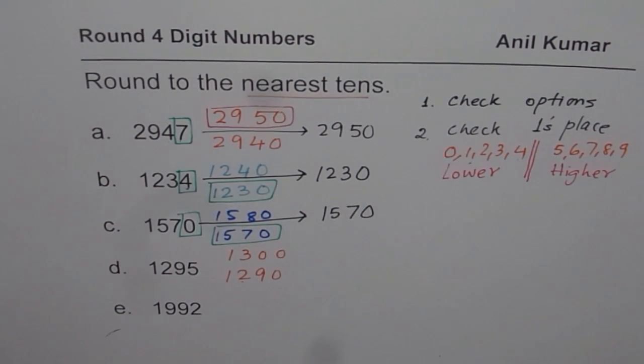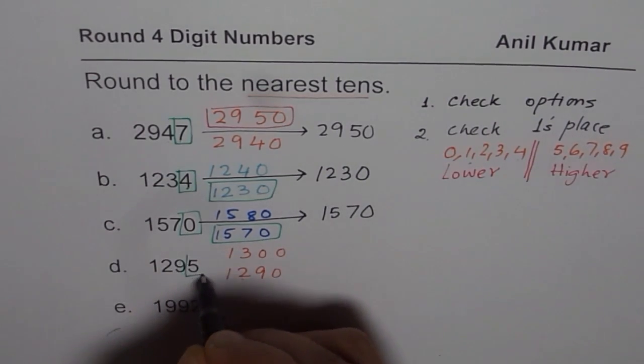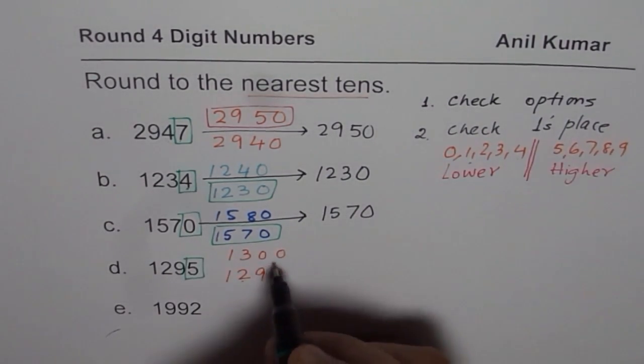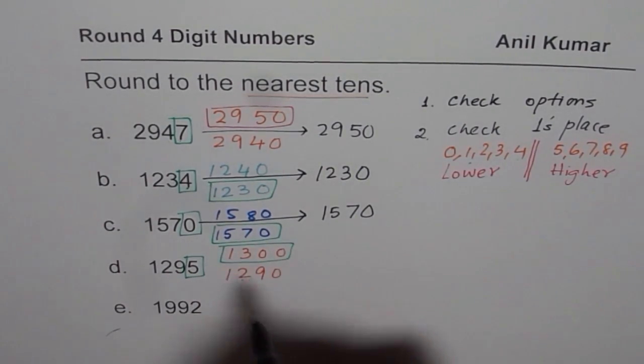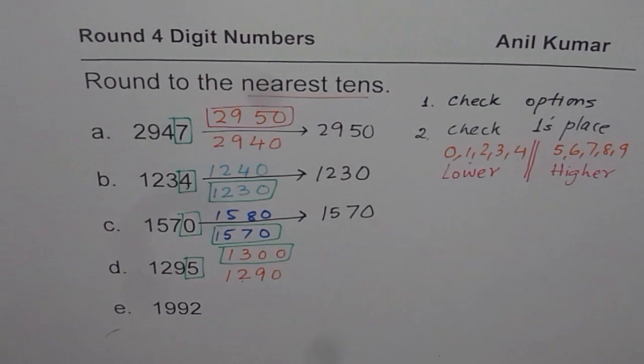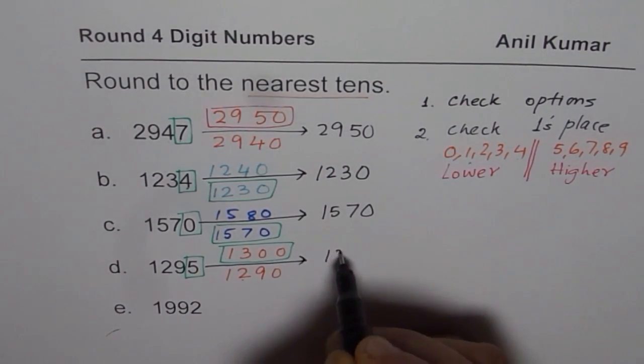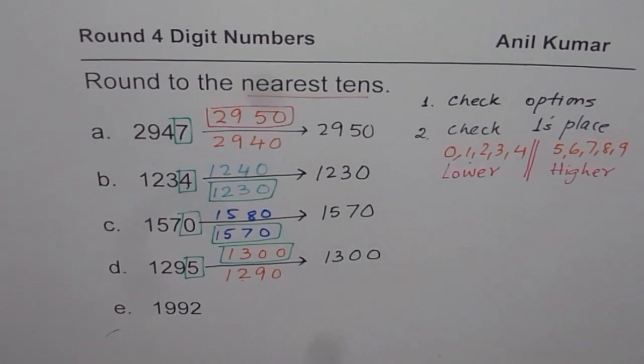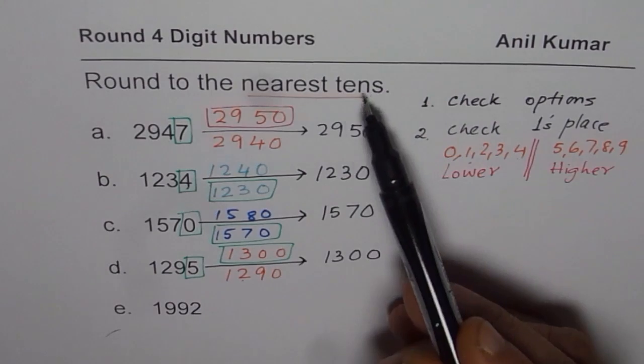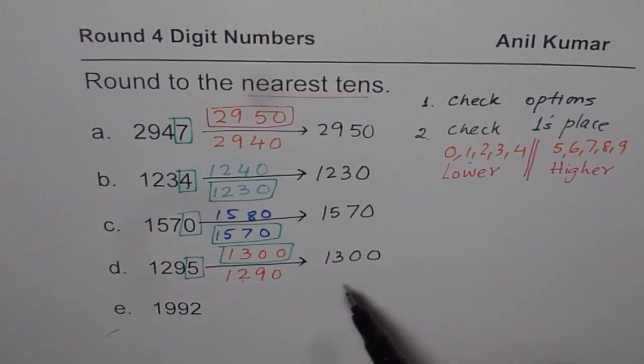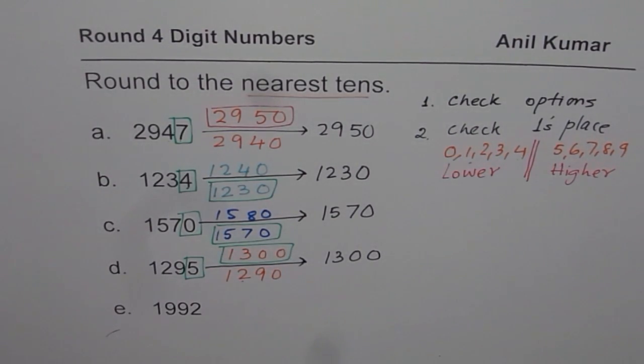Now, the next step is check the 1's place. 5 or more. So higher. So the answer is 1,300. So that number 1,295 rounds to 1,300. When you round to tens, you may get two zeros at the end or 10, 20, 30, 40, 50, 60, 70, 80 or 90. Those are all the options.